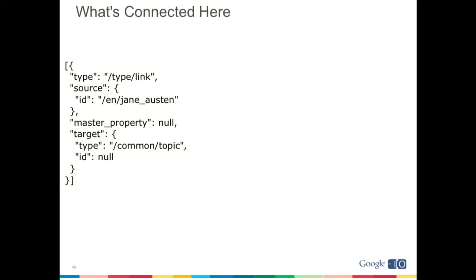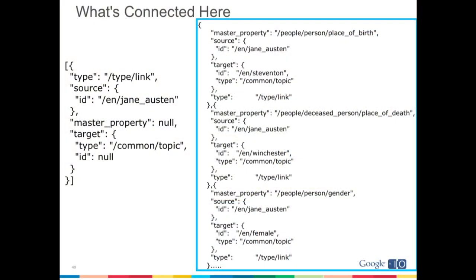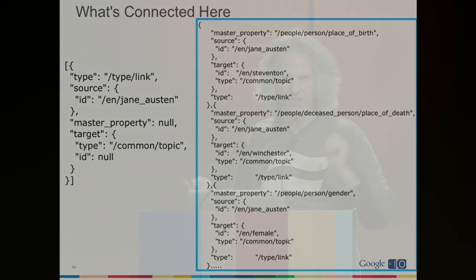We can formulate a simple reflect query using /type/link: start with the source being Jane Austen, get the property that connects her to other things, which on the other side are just topics. This is a nice little reflect query, and we find that she has a master_property of place_of_birth with target /en/steventon, a place_of_death which was Winchester, gender as female, and it goes on — all of the things connected up to Jane Austen.